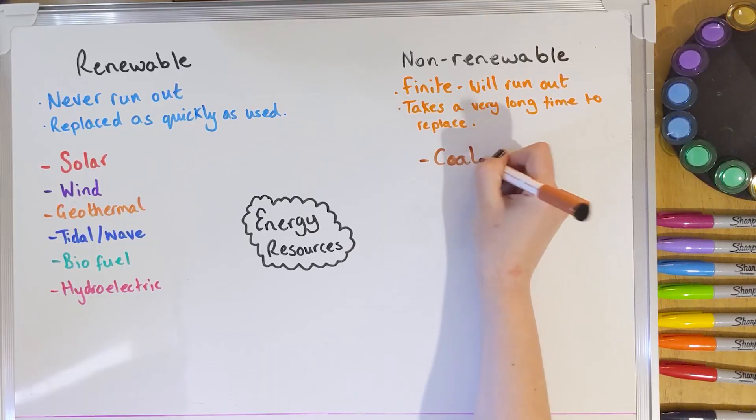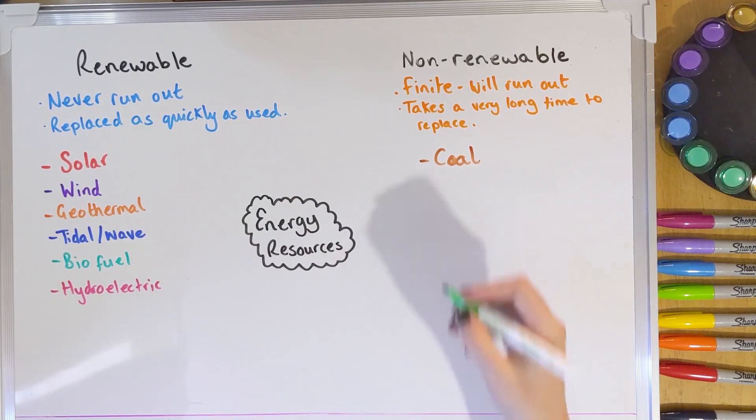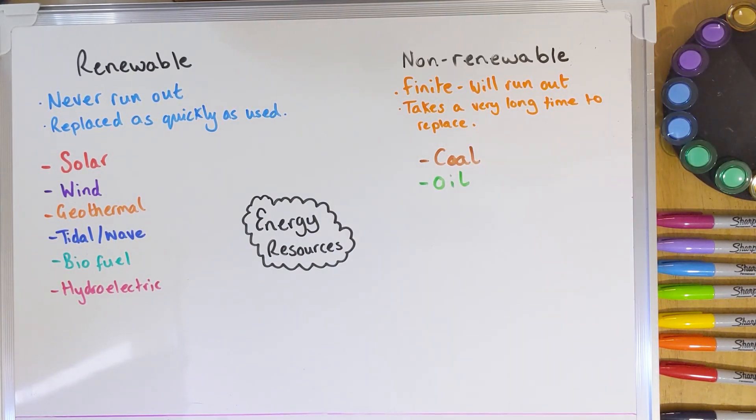There are three main examples of non-renewable energy resources, and they all come from fossil fuels — made from the fossilized or undecayed remains of ancient organisms. The main three are coal, oil, and natural gas.